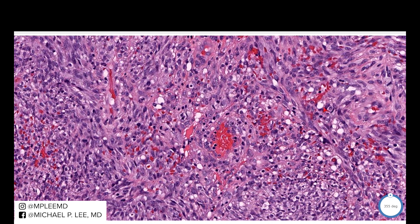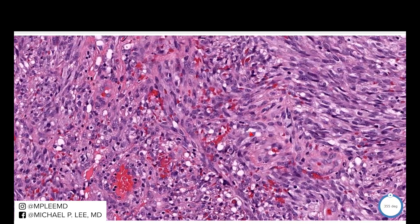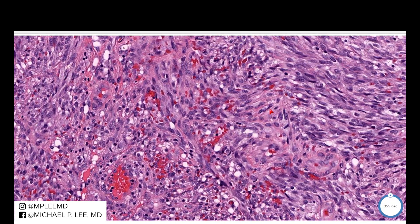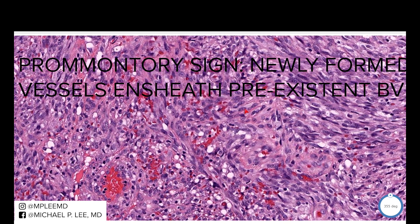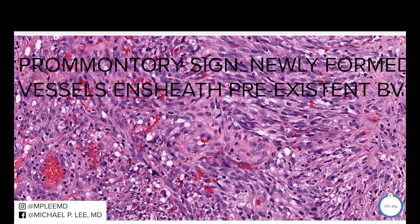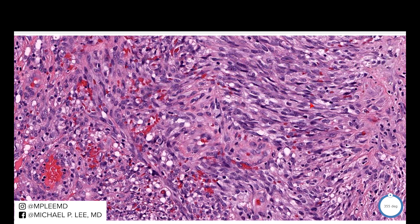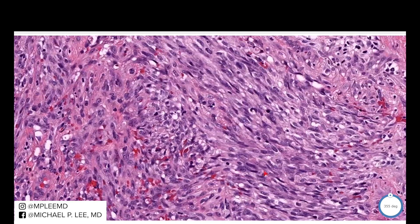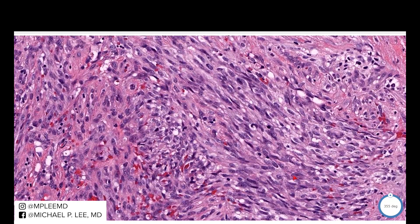In the nodular form, we do not see the promontory sign as well. The promontory sign is the growth of a vessel within a pre-existing vessel, and that's usually a good tip-off for the plaque and patch stage. Here you can see some mitotic figures — pretty hyperchromatic cells running parallel to each other with a vague hint of vascular nature because of all the red cell extravasation.